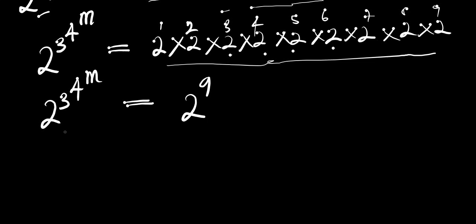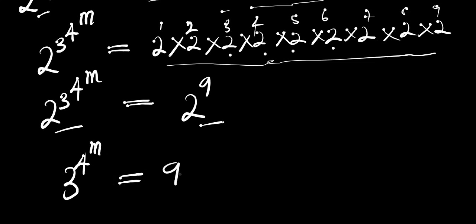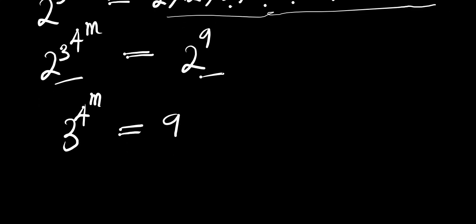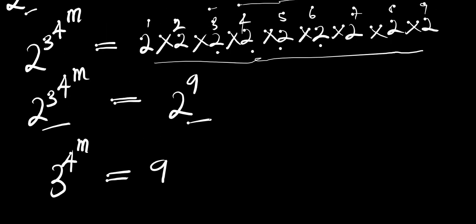Now if you look at what we have here, the bases are the same. When the bases are the same, we compare the exponents. So that means we are now going to have 3 to the power of 4 to the power of m, and this equals 9.